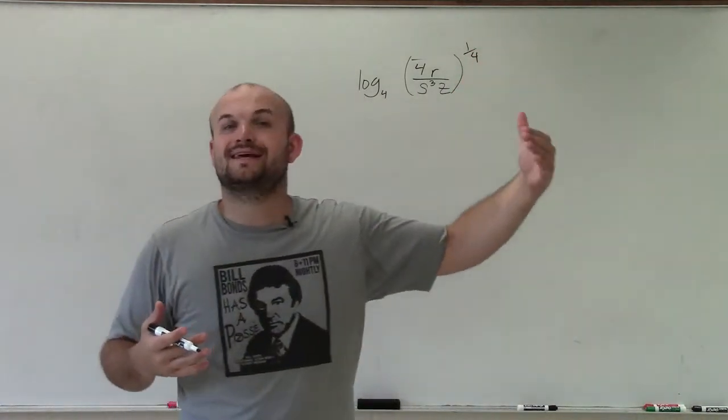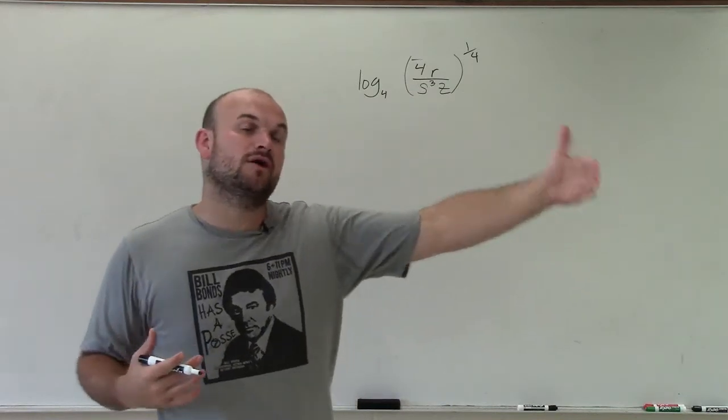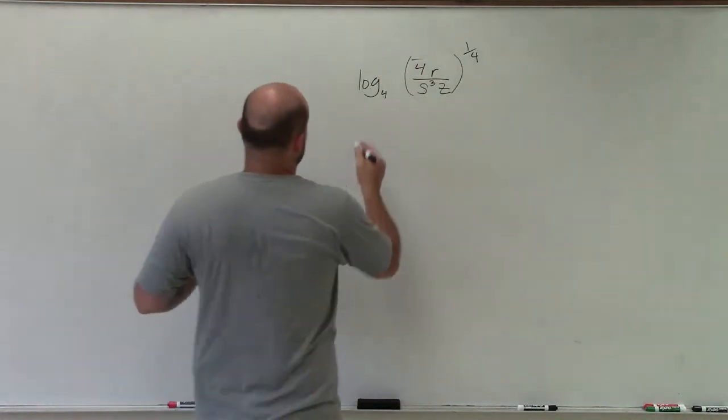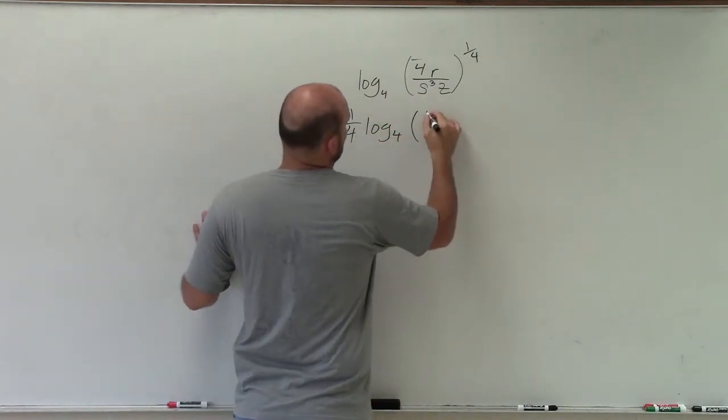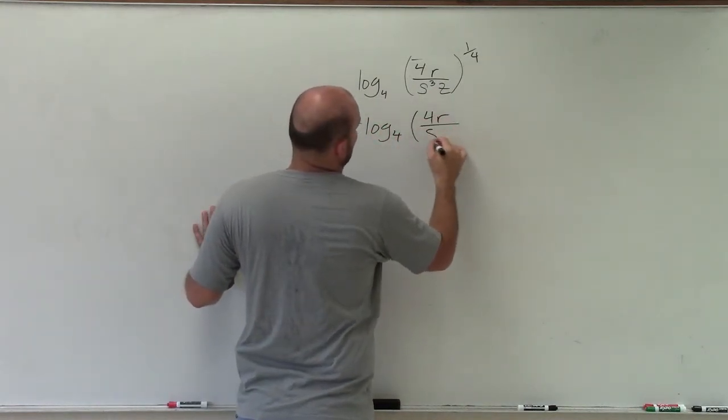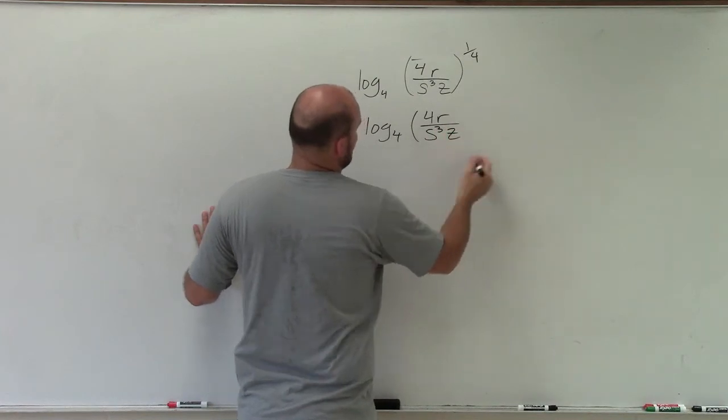Therefore, now we can always take our, when we're writing an expanded form, we take our powers and we write them in front of our logarithm. So this case would be 1 fourth times log base 4 of 4r divided by s cubed times z.